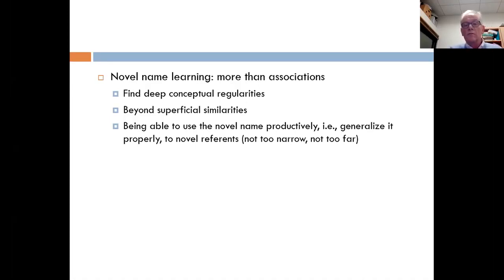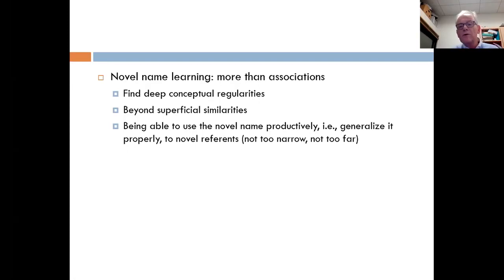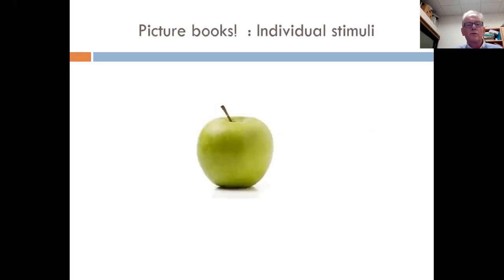What does proper generalization mean? In the case of objects, it means not too narrow — for example, all dogs — and not too far — not extending beyond dogs to wolves, for example. I will focus a lot on this generalization situation.